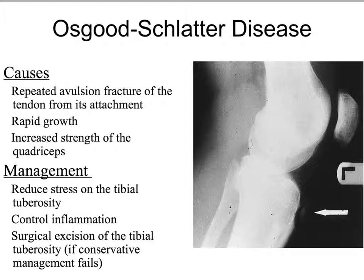Osgood-Schlatter's disease is an apophyseal pathology typically seen in patients who have a rapid increase in quadriceps strength. As a result, the quadriceps group's hypercontraction continually places pull on the distal portion of the patellar tendon at its attachment to the tibial tuberosity. Over time, with microtrauma, the fibers of the patellar tendon start to pull away from the tibial tuberosity, and you also get an exostosis — a bony outgrowth of the tibial tuberosity.